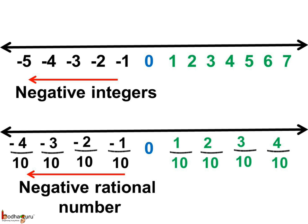All the negative rational numbers are situated on the left of 0, like the negative integers on a number line. For example, minus 4 is equal to minus 4 by 1.